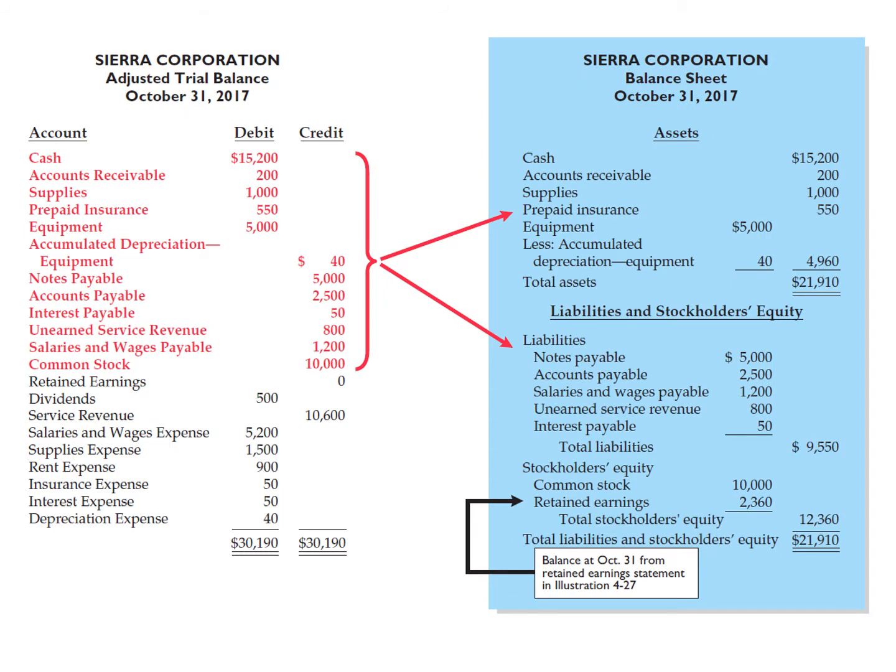Companies can prepare the balance sheet from the asset, liability, and stockholders' equity accounts. They obtain the amount reported for retained earnings on the balance sheet from the ending balance in the retained earnings statement.